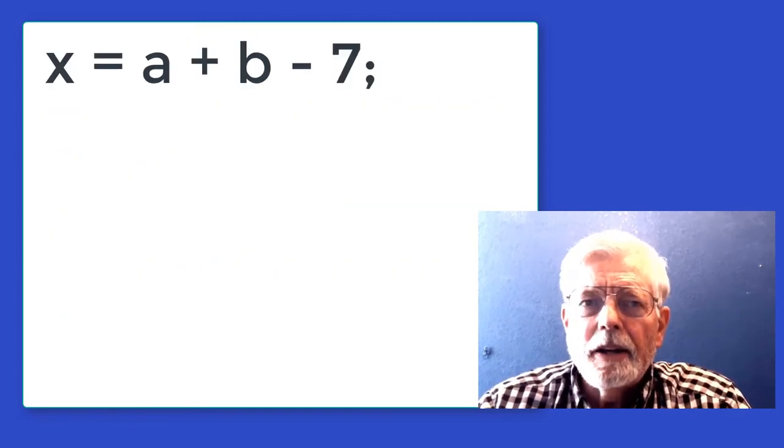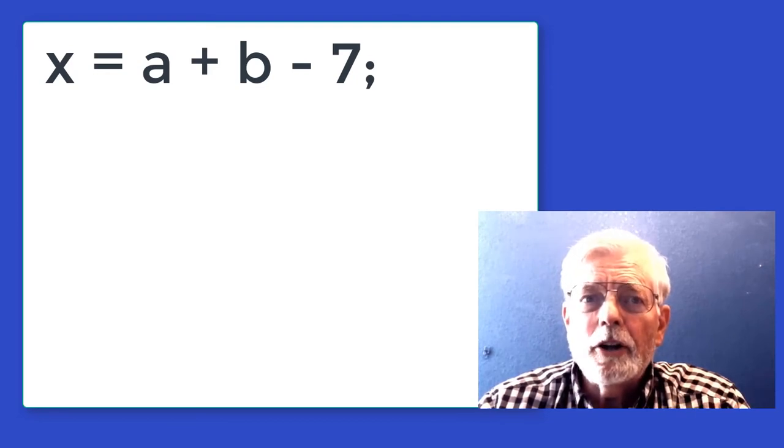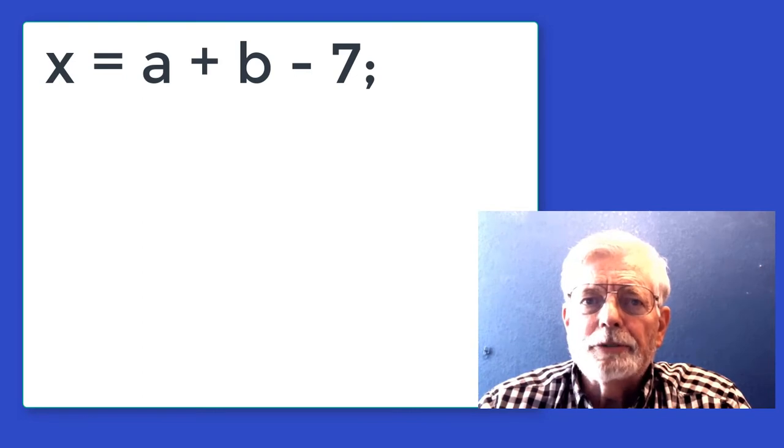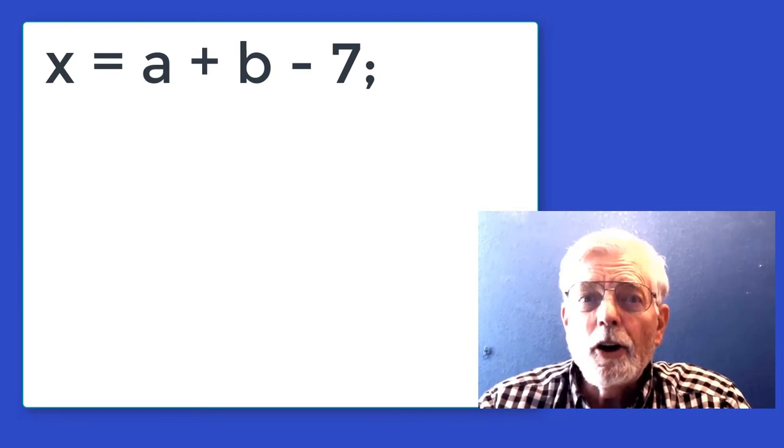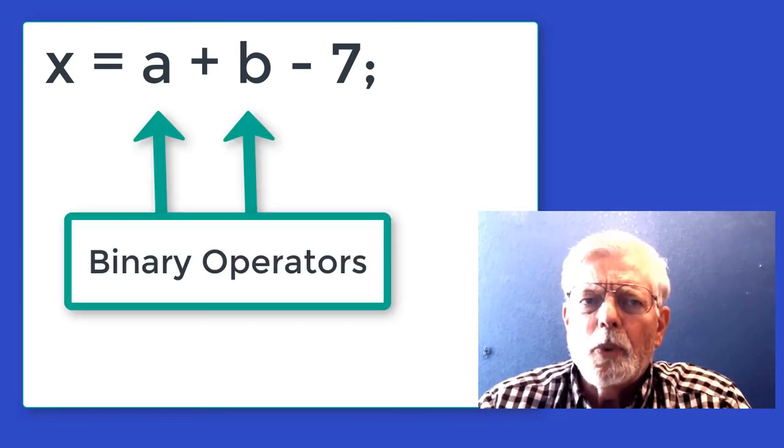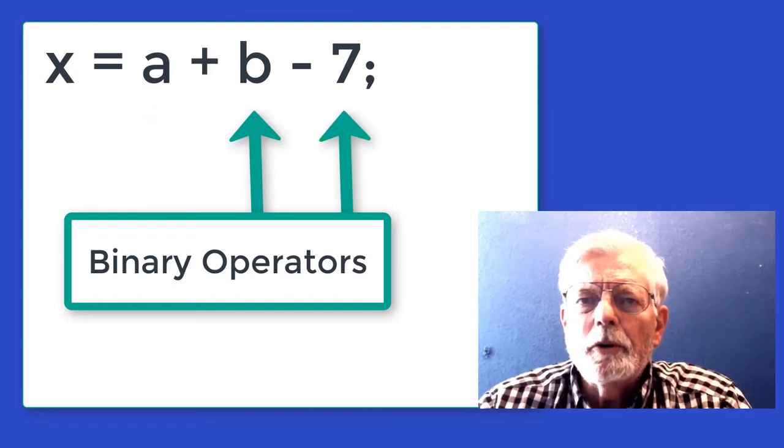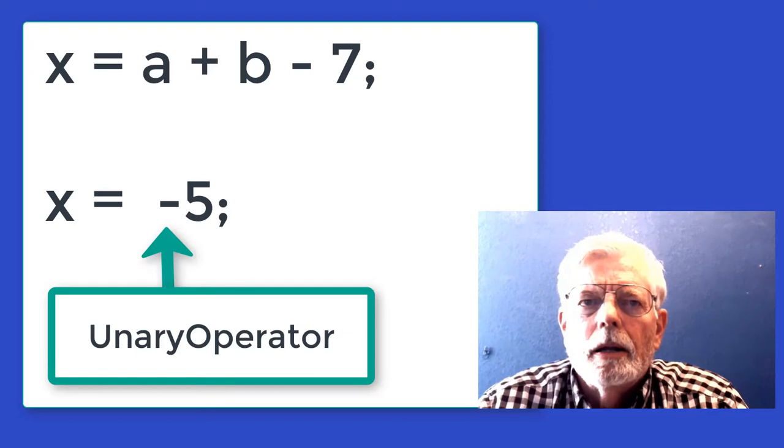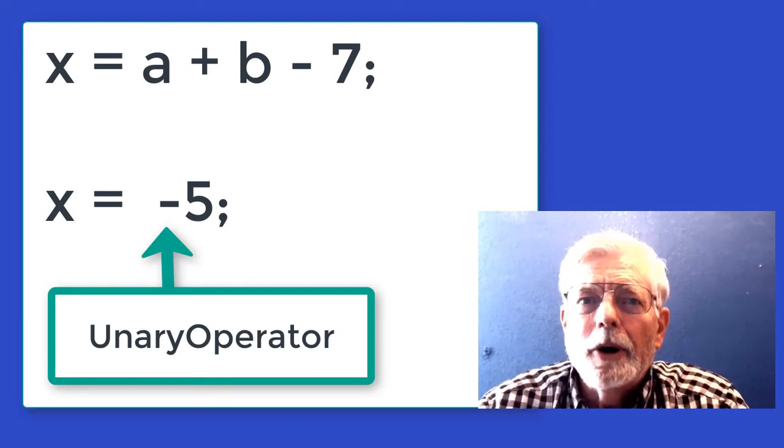The plus and minus are binary operators if they occur as part of a math expression such as x = a + b - 7. They are called binary operators when they have a variable or literal on both sides of the operator. The plus and minus are unary operators if they occur by themselves directly after another operator, such as x = -5.